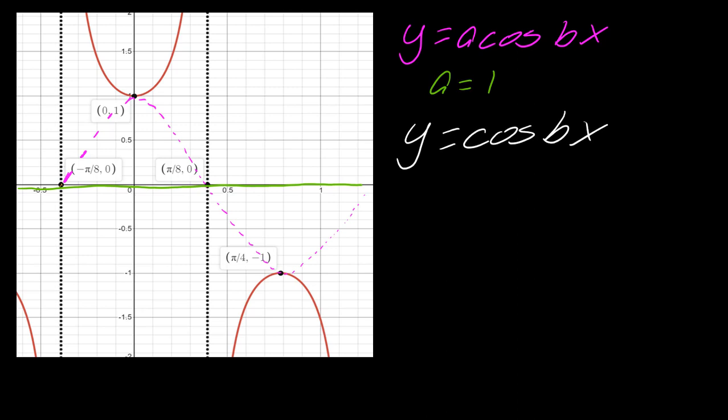So since I can tell that my amplitude is 1, I can just write this as cosine of bx. Now as far as figuring out what the b is, you have some options of how to do this. I could leverage this point here, π/4, -1. I like to use something that just has numbers in it. Because if you have 0 in it, it's just going to kind of cancel everything out.